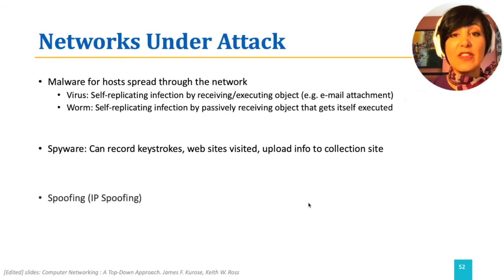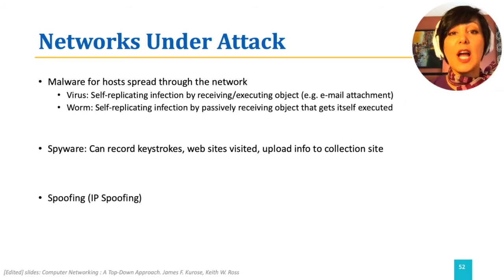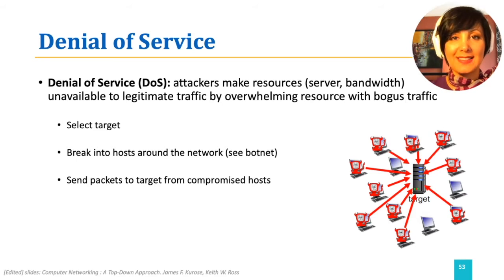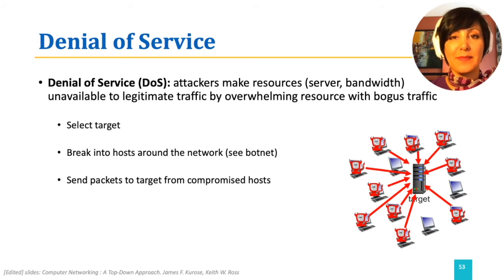Spoofing is another type of possible attack in the networks. For example, in IP spoofing, a system pretends it is another system. Denial of service attacks prevent the serving end system from doing their usual functionality. This is done by exhausting them with too many requests. Denial of service attacks could be carried out in different networks.